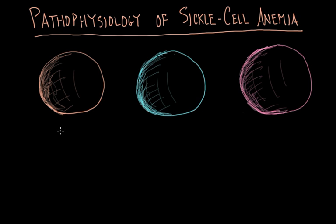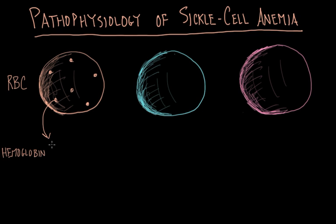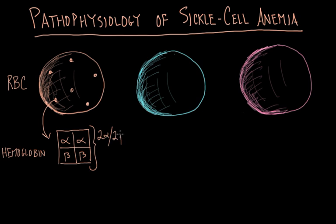Before talking about the pathophysiology of sickle cell anemia, let's look at three red blood cells, starting with one on the left. This is a red blood cell found in a healthy adult. Inside it, there are thousands of oxygen-carrying molecules called hemoglobin. A single hemoglobin molecule has four subunits: two alpha subunits and two beta subunits. This is the predominant form in healthy individuals, called hemoglobin type A.